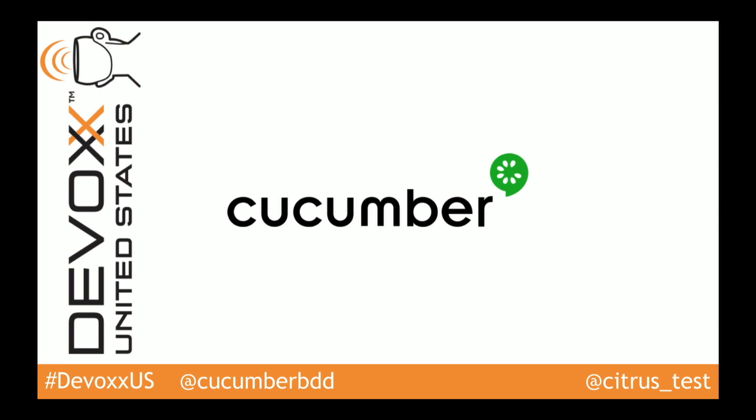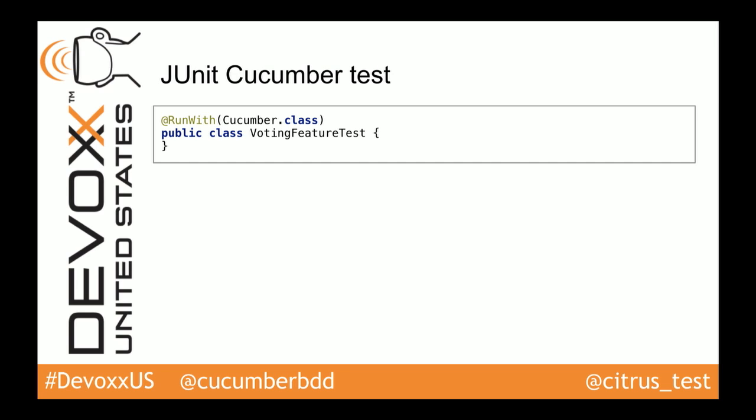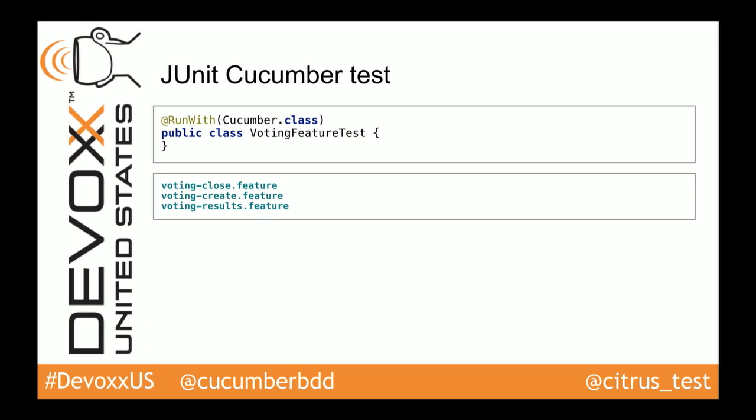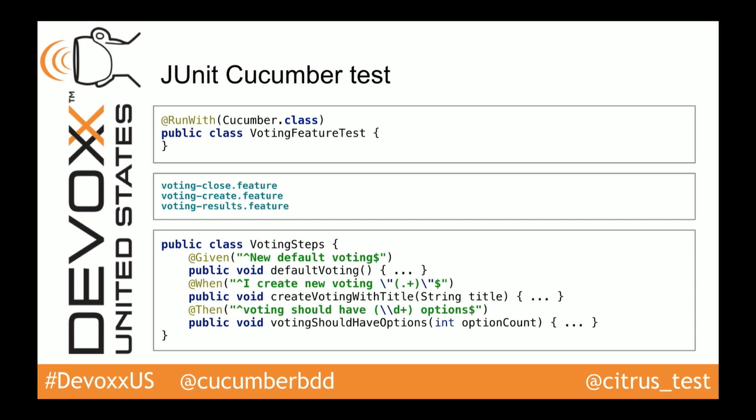Cucumber as a framework can read these specification files and make them directly executable as unit tests. JUnit offers a way to execute tests with a test runner, and Cucumber provides such a test runner. We use the JUnit RunWith annotation and give it the Cucumber test runner. Cucumber will read all feature files in that same package as the class and make them executable as unit tests. We have to provide some kind of mapping — called glue code — so that the feature file and the executable unit testing method are matched. These are called step definitions.